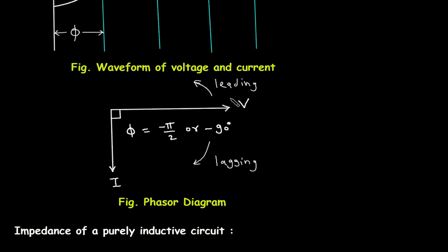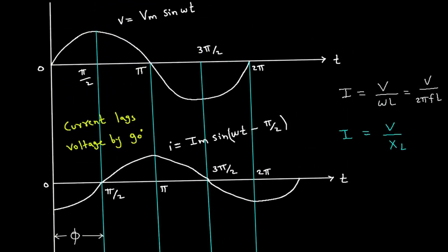We know that the phasor rotates in the counter-clockwise direction, but here the current is lagging. So φ equals minus π/2, or minus 90 degrees. Also, the line representing voltage in the phasor diagram is bigger than the line representing current, because the amplitude or magnitude of voltage is greater than that of current — as we have already seen from Ohm's law.